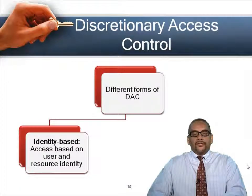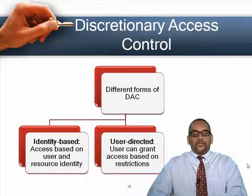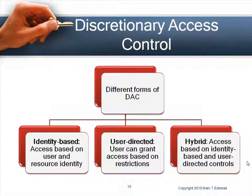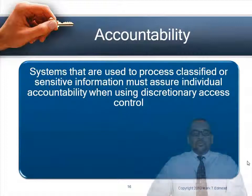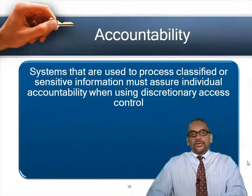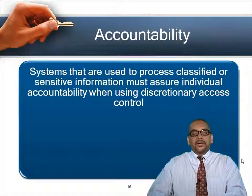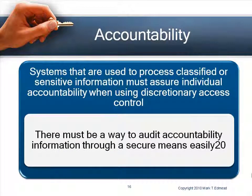There are different forms of DAC: identity-based (access granted based on user identity and/or resource identity), user-directed (the user grants access), and hybrid (a combination of both). Regardless of the type of access control — discretionary or mandatory — there should be accountability, meaning systems must record and log access to files so users are monitored and accountable for any changes. This is called auditing.